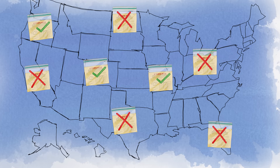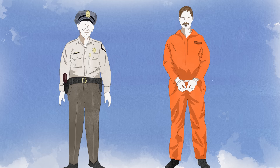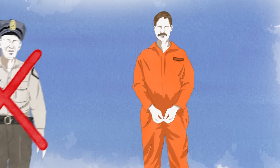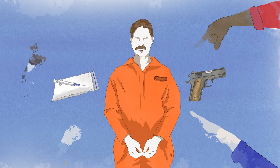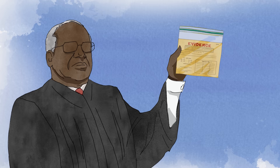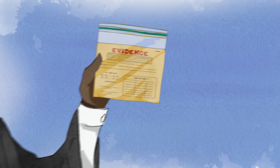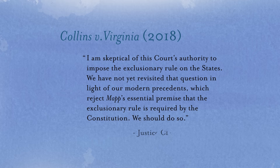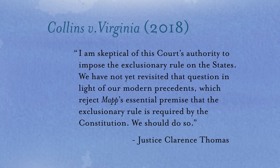Mapp v. Ohio was a controversial decision when it was handed down in 1961. The common criticism is that it lets the criminal go free because the constable blundered. Critics of the exclusionary rule ask: why should we let someone who has a pile of drugs or a murder weapon in their home get off simply because the police made some kind of a mistake in collecting that evidence? The exclusionary rule remains controversial even today. For example, in 2018, Justice Thomas, in a dissenting opinion, called on the Supreme Court to re-examine the basic constitutional underpinnings of the exclusionary rule. Justice Thomas suggested that the underpinnings weren't there and it was time for the Supreme Court to simply abolish the exclusionary rule.